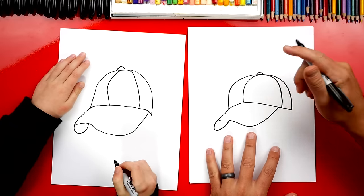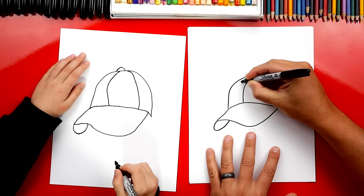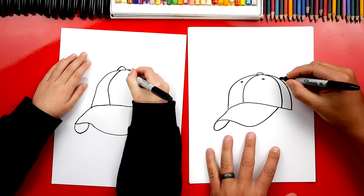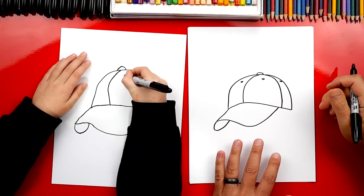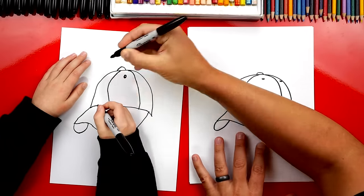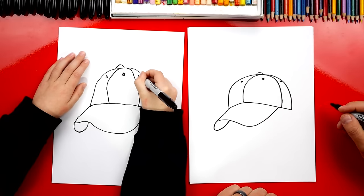Now there's also little holes in a baseball hat. So we're gonna draw a little hole right here. Another one over here. And if you want you can also add another one just right on the end. Just teeny little holes. Another one over there. And another one on the other side.